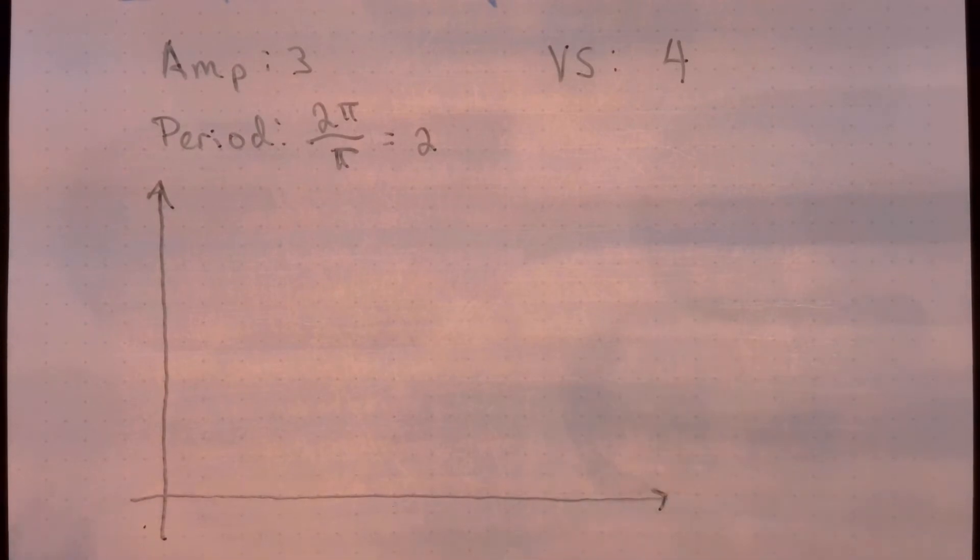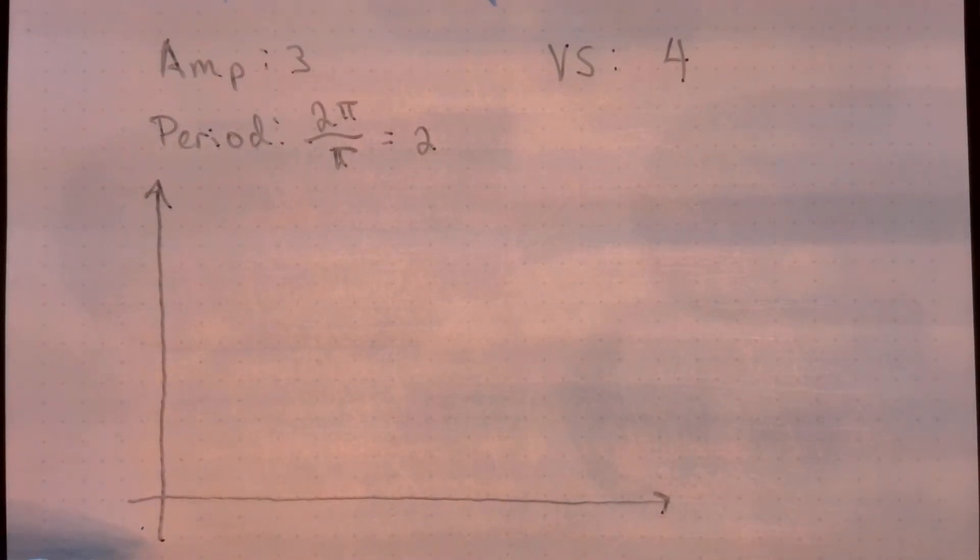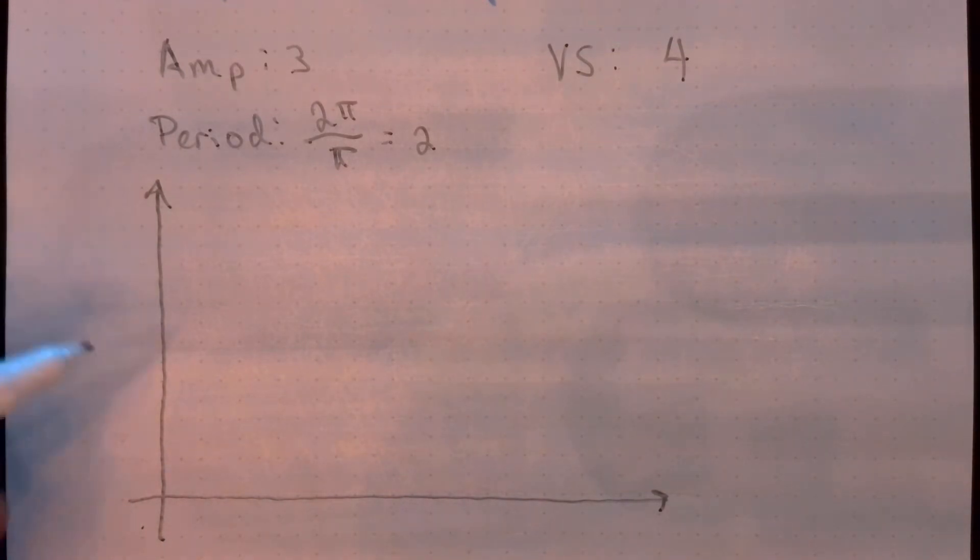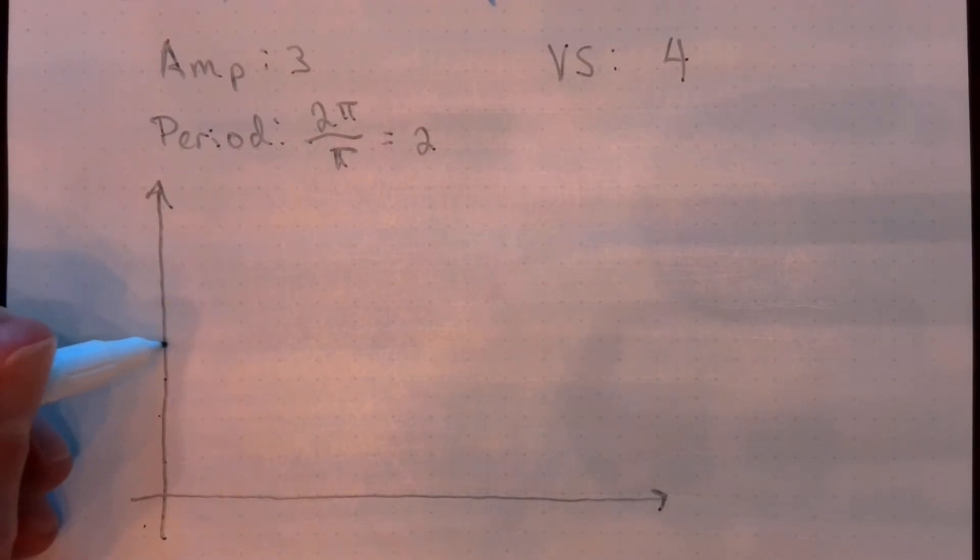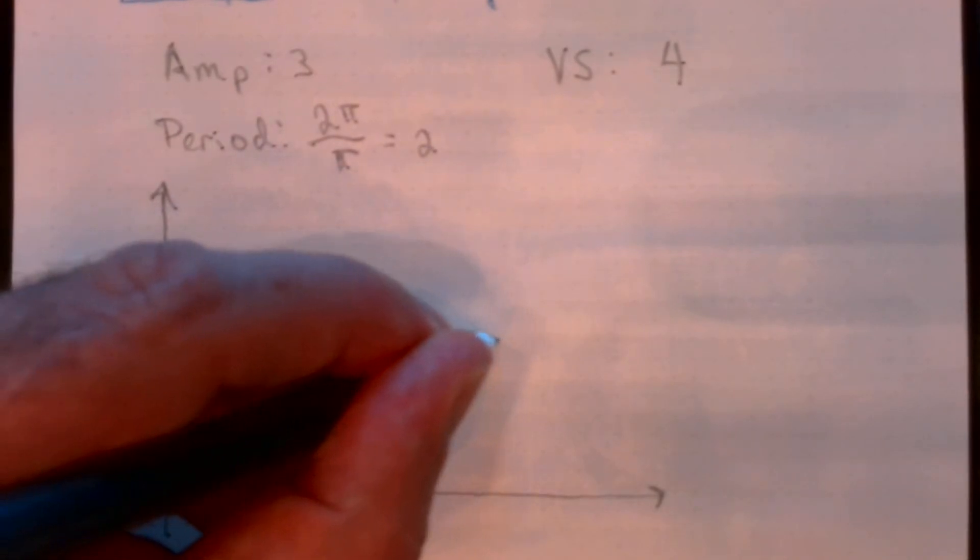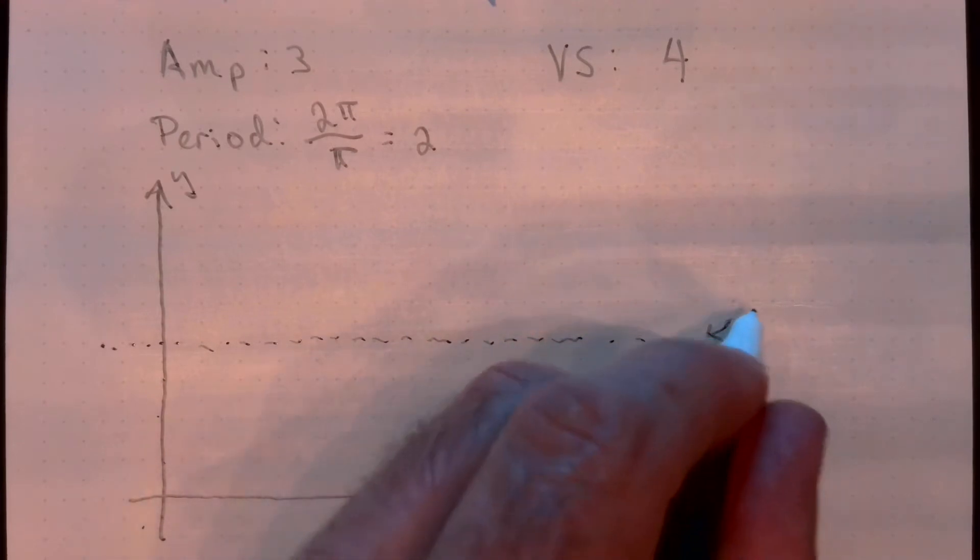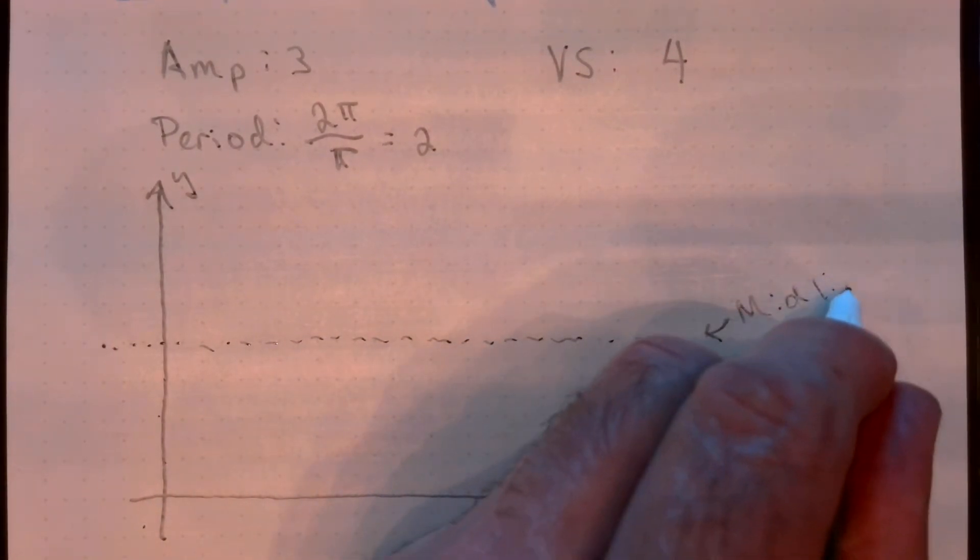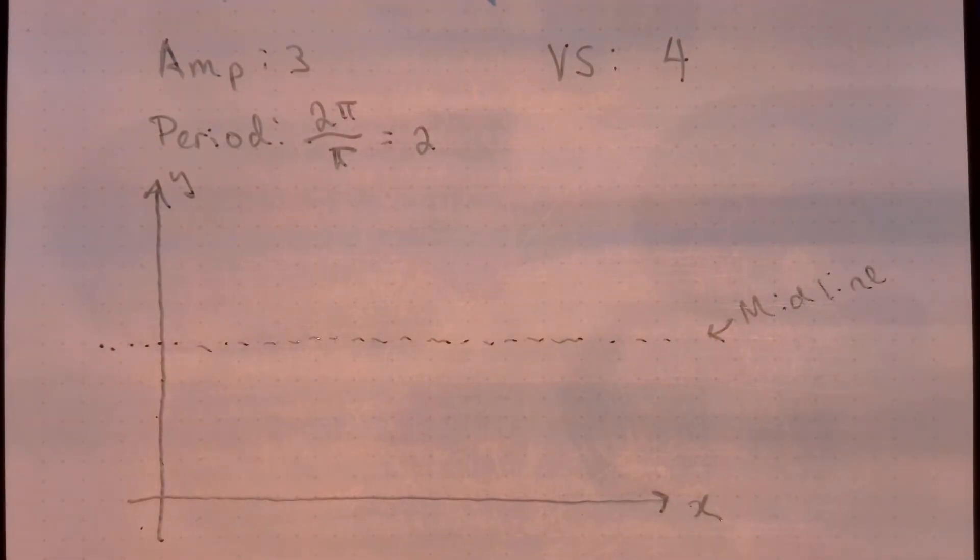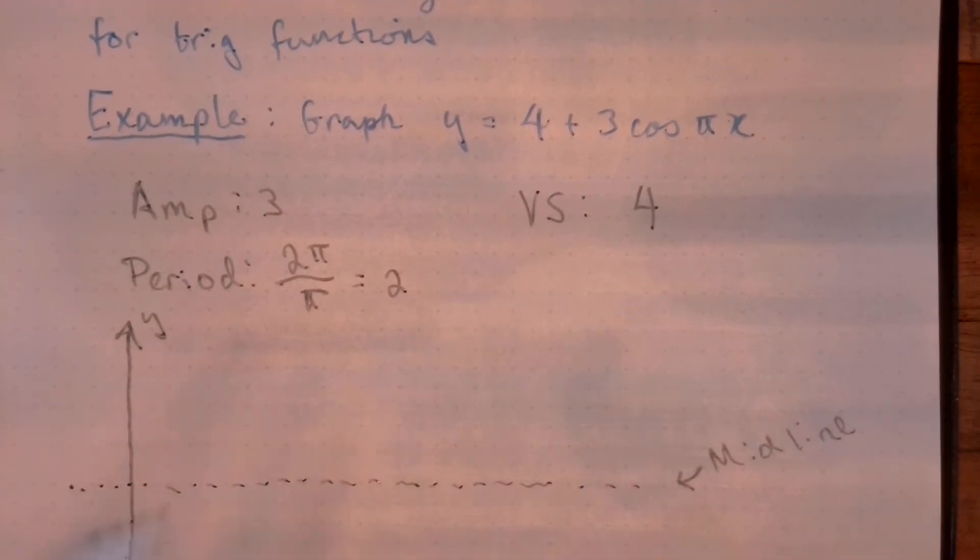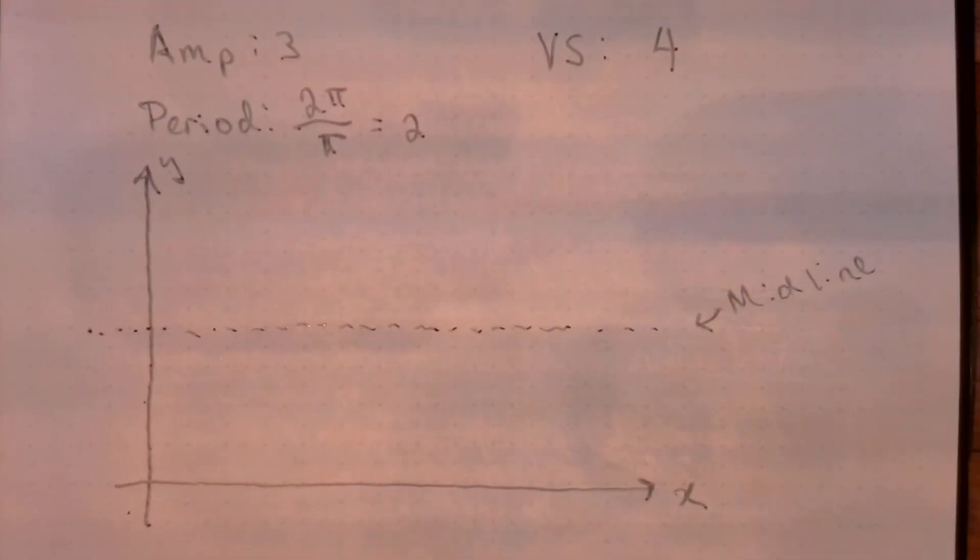Notice I am not devoting any space on my graph to stuff happening below the x-axis. We'll see why that is in a second. So I am going to draw a dotted line here at y equals 4. That is of course my y-axis. This is my x-axis. This is the midline for my function. The trig function y equals 4 plus 3 cosine pi x is going to be oscillating about that midline.